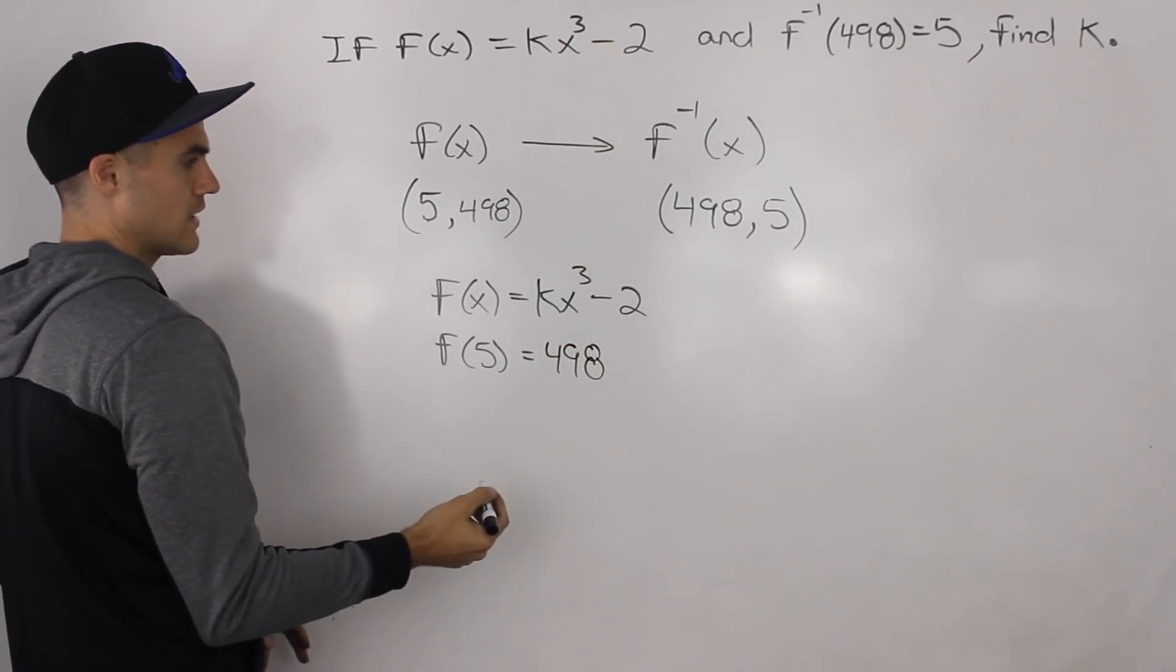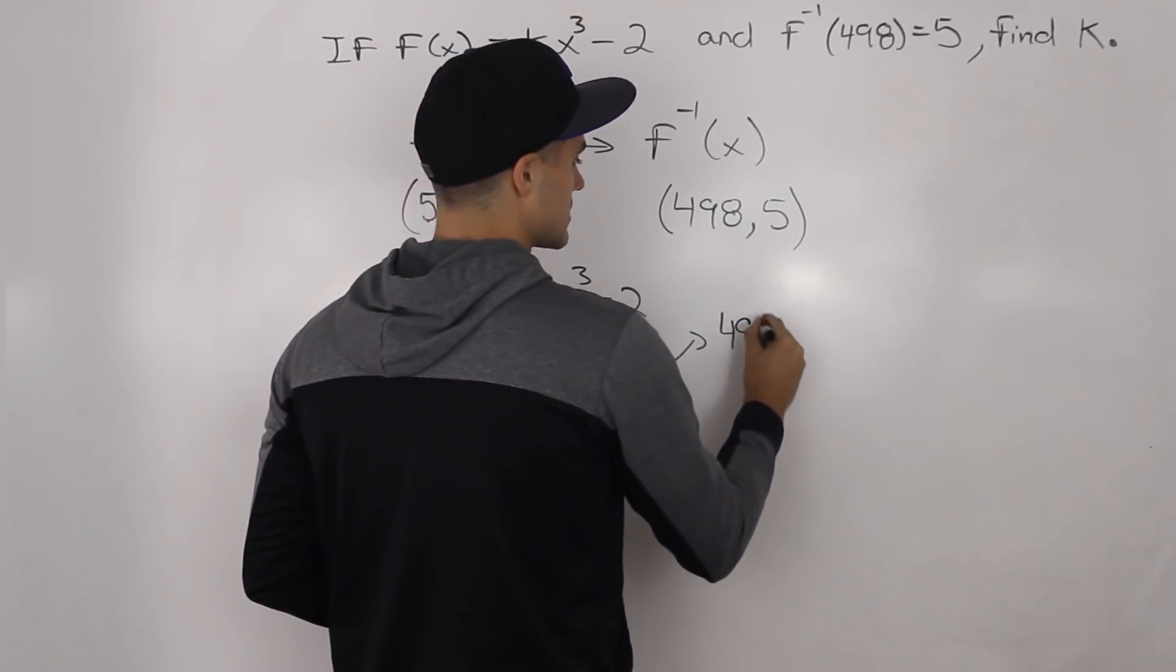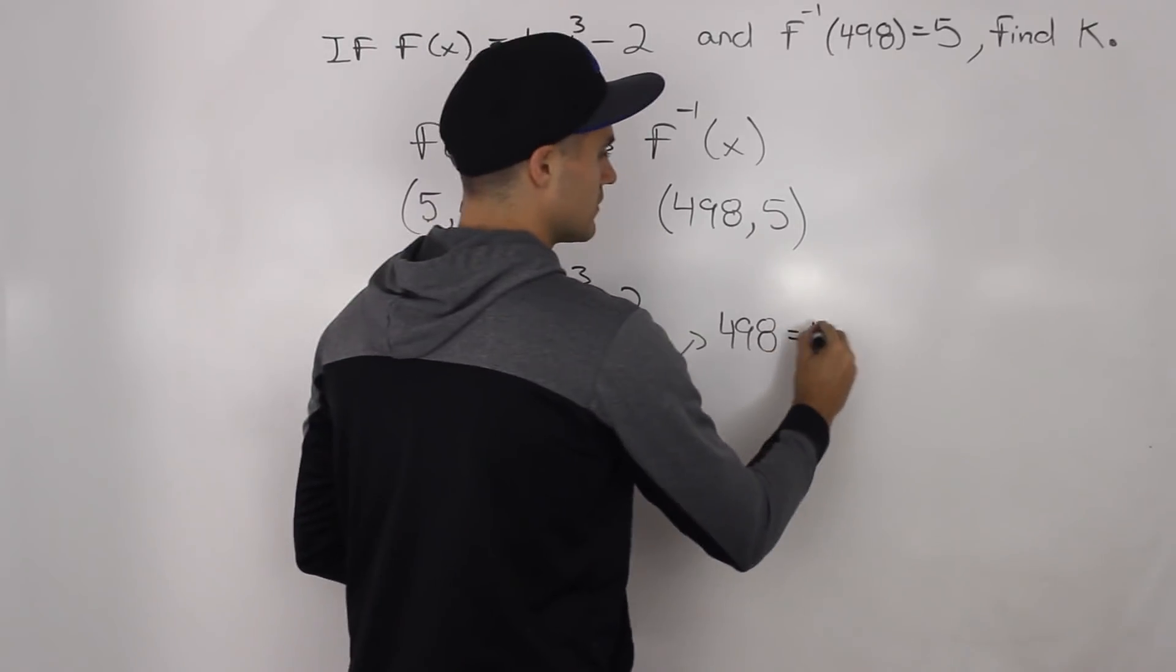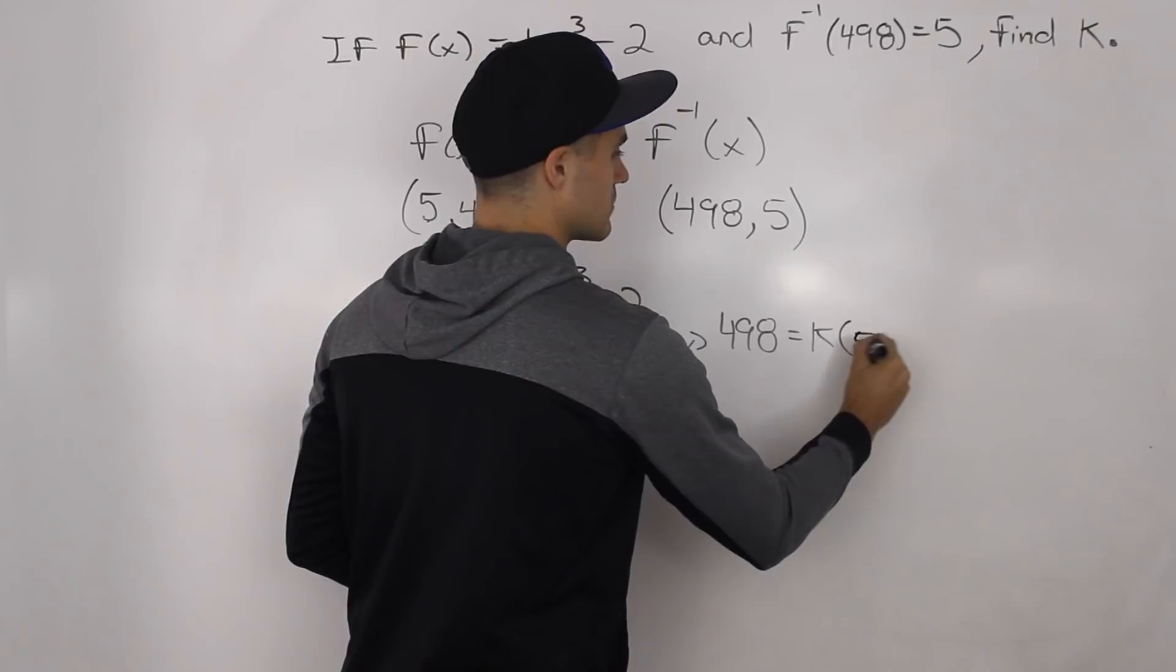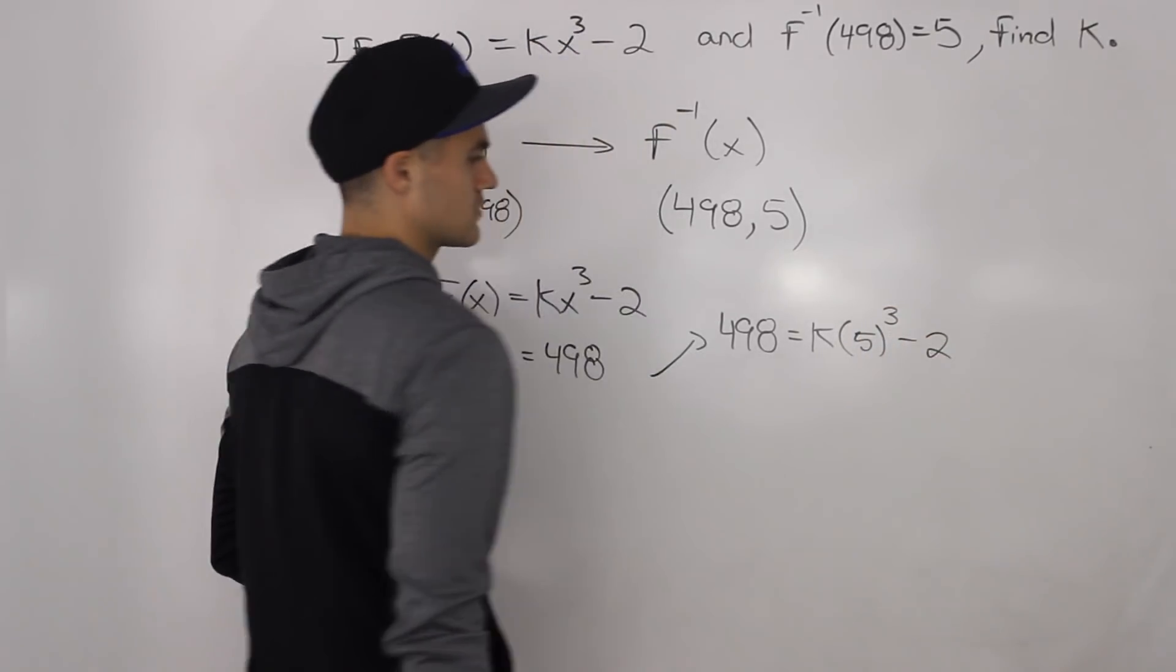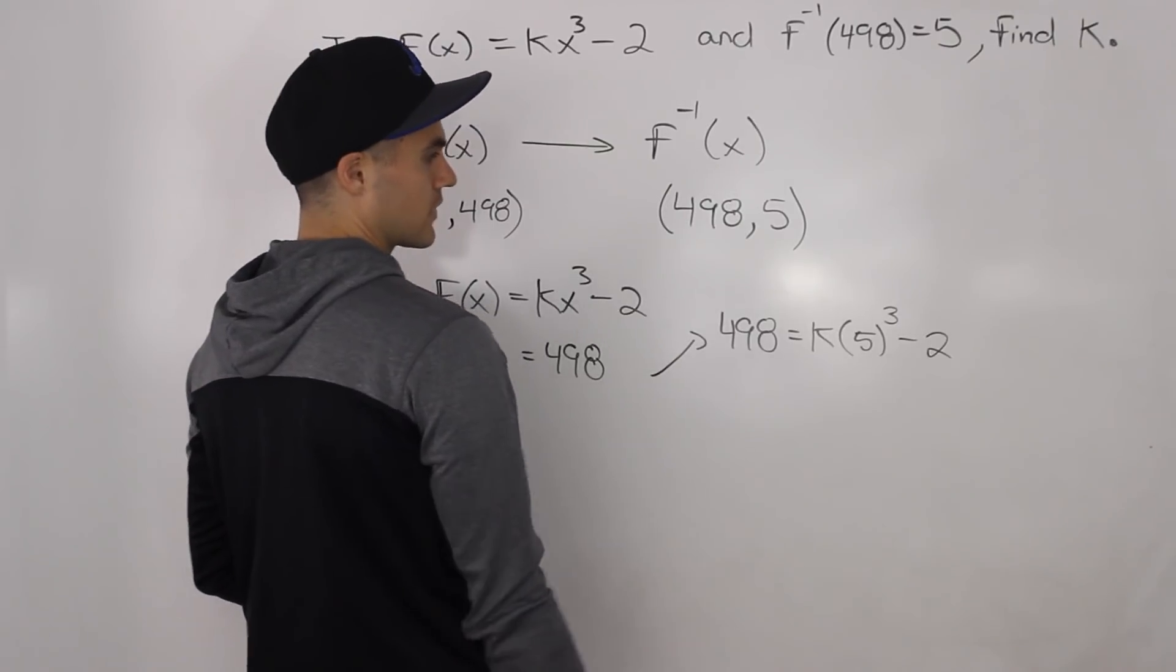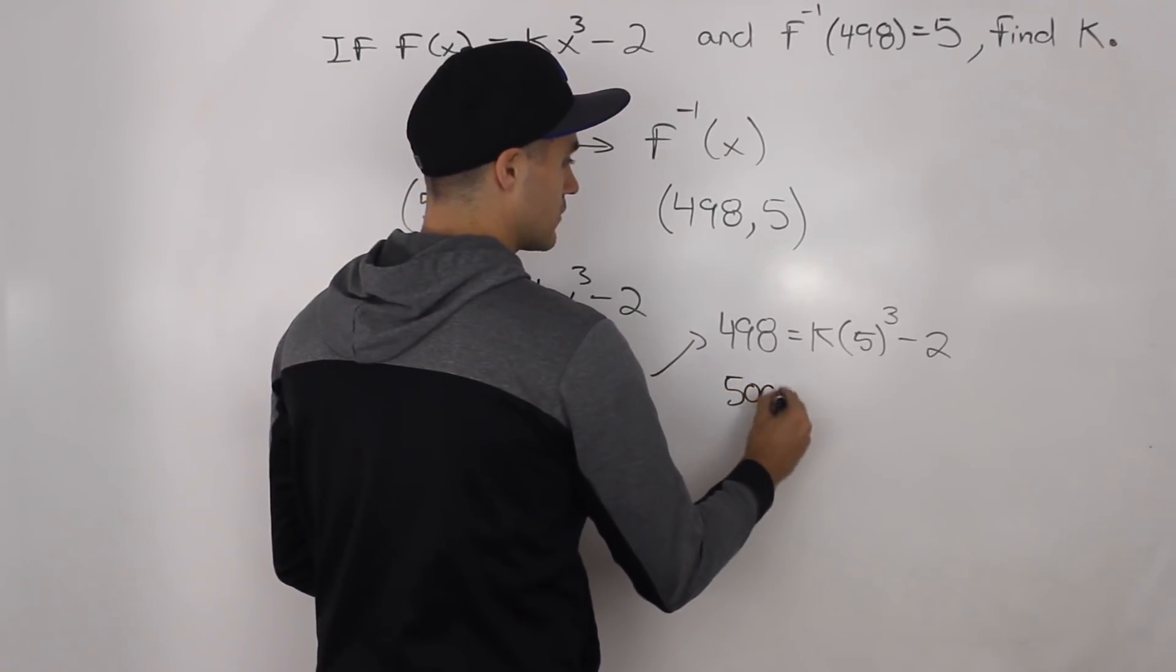So what we can do now is write 498 equals k times 5 to the power of 3 minus 2. And now we can solve for k. So we bring the negative 2 over, 498 plus 2, that gives us 500.